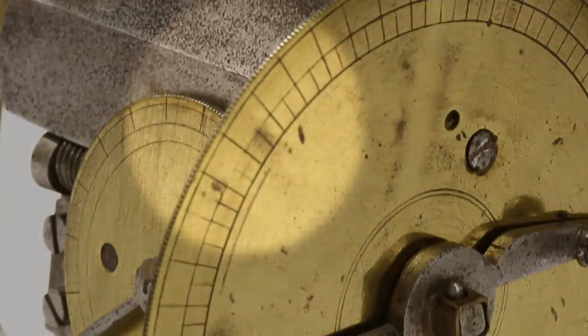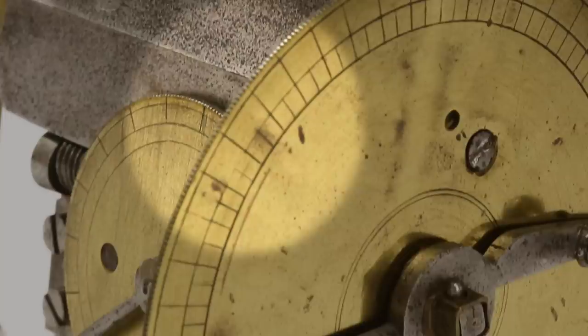On both dials, there is knurling or reading like on a coin around the outside edge. Why, if the rest of this is somewhat rough, would somebody put a decorative touch on this? Probably practice.